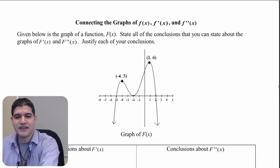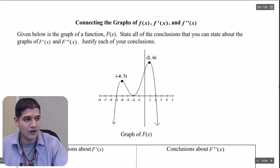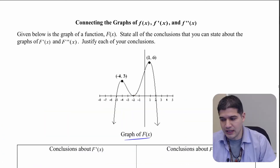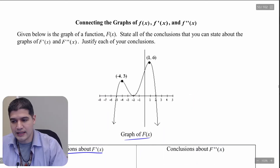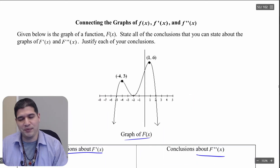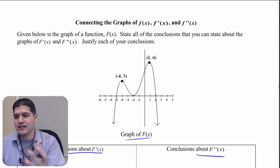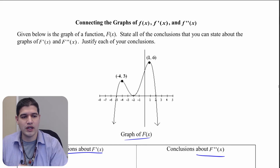What I'm looking at here is a graph, and what I want to notice is — what is this graph? Well this is the graph of f of x, and what I want to do here is make conclusions about f prime and about f double prime, the second derivative. What conclusions can we draw from the information given in that graph for f?